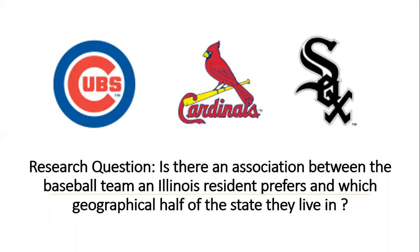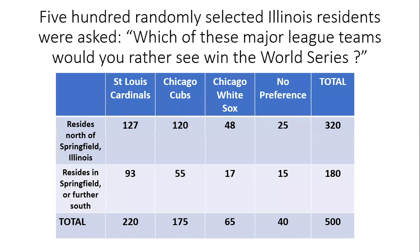Suppose to help answer that research question we take a survey, and suppose that 500 randomly selected Illinois residents are asked which of these major teams would you rather see win the World Series. Those in the survey are given four choices: the St. Louis Cardinals, the Chicago Cubs, the Chicago White Sox, or no preference between those three teams.